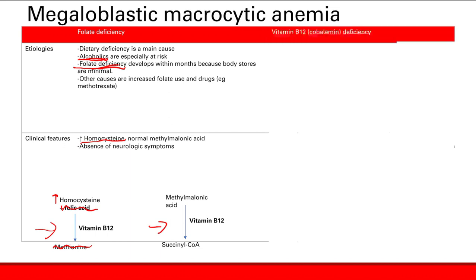Vitamin B12 deficiency — another name is cobalamin. Vitamin B12 is obtained from animal products: meat, fish, eggs. Folate is from fruit and veggies; vitamin B12 from animal products. Regarding absorption: it gets to your stomach, and once it reaches the small intestine, it has to be bound to intrinsic factor, which is made by the parietal cells in the stomach. Intrinsic factor binds vitamin B12 and carries it all the way to the ileum, where vitamin B12 gets absorbed. If you don't have intrinsic factor, you don't get absorption of vitamin B12.